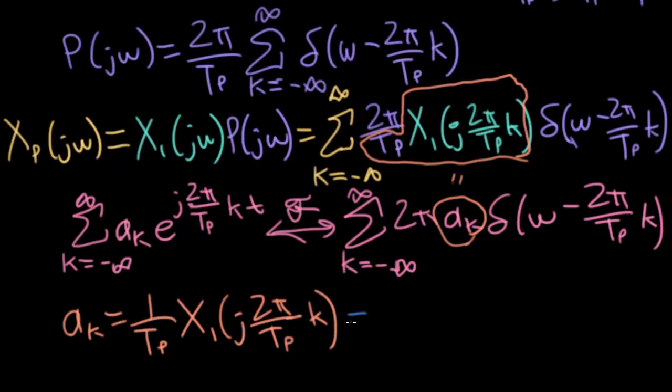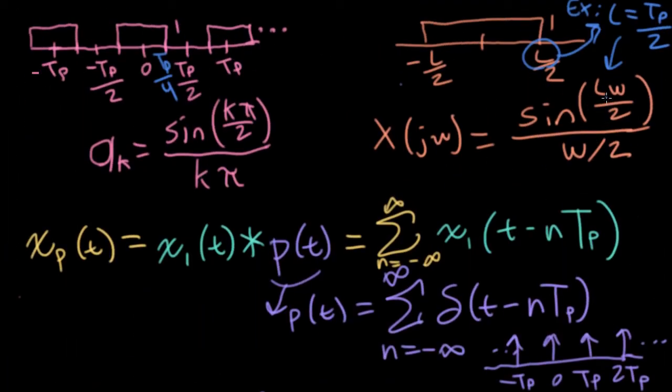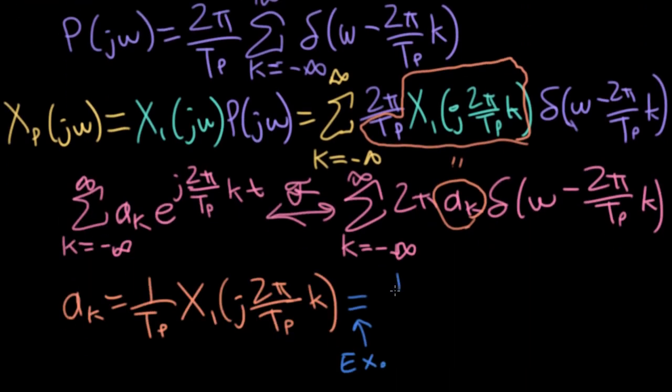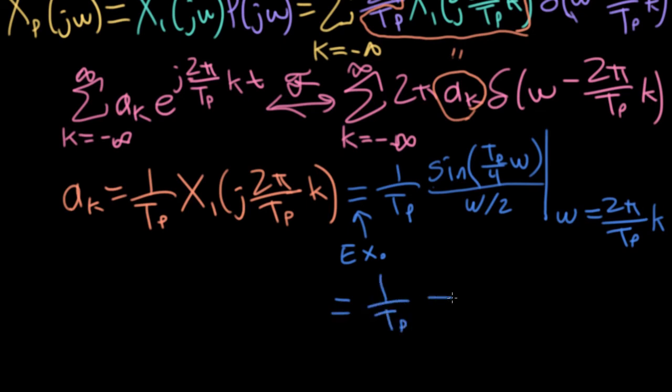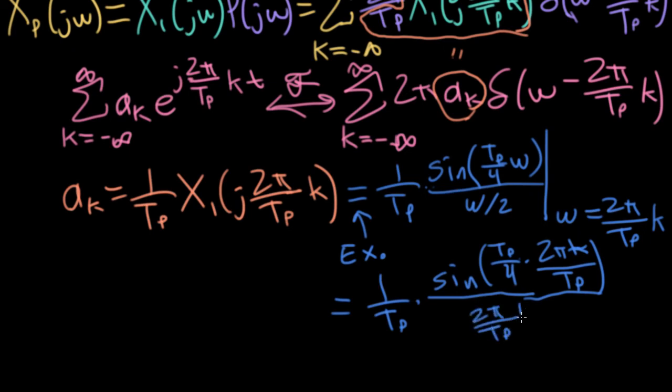So if I make that substitution, in this particular example, this particular formula here is going to have tp over 4. So I'll write 1 over tp sine tp over 4 omega all over omega over 2. And now I need to evaluate this at 2 pi over tp times k.